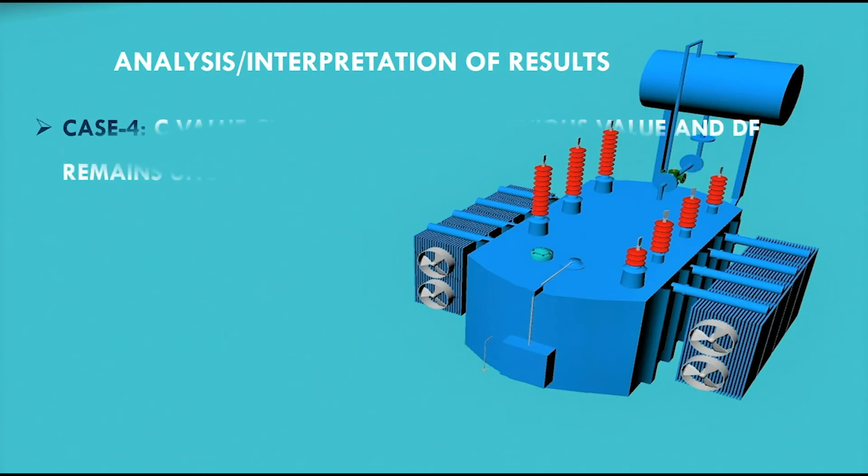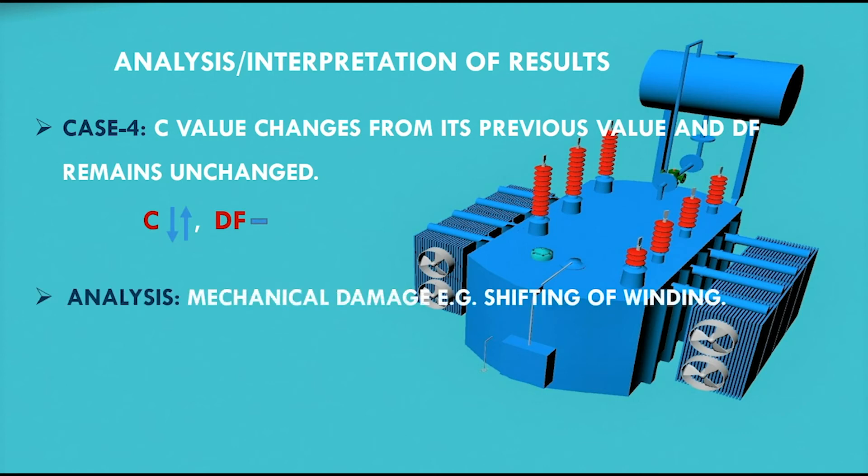In fourth case, if C value changes from its previous value that is it either increases or decreases and DF remains unchanged, it means that there is some mechanical damage for example shifting of winding inside the transformer.